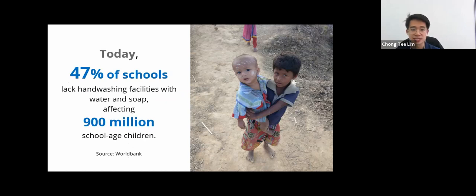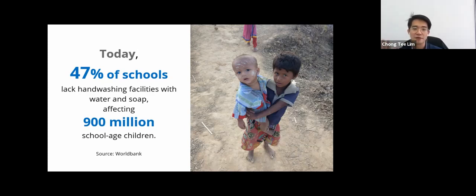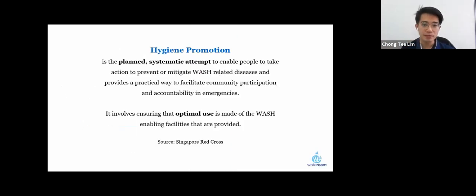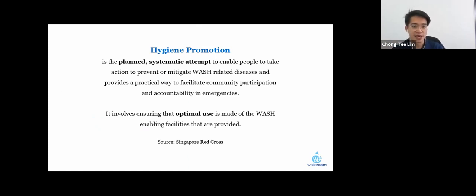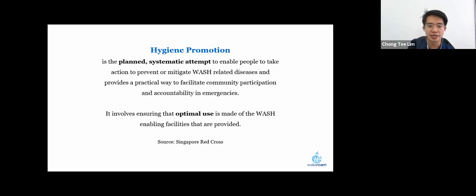More than 47% of schools lack proper hand washing facilities, which need to be accompanied by basic soap to prevent illness and effectively remove bacteria and viruses from hands. We also need to ensure proper sanitation and hygiene promotion — a systematic and intentional process that educates people on how to mitigate preventable WASH diseases, typically involving a combination of education tools and resources.